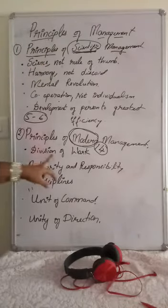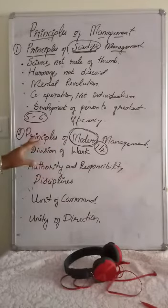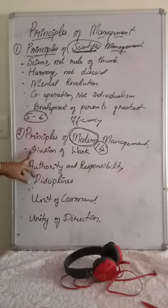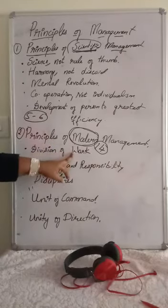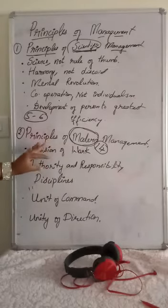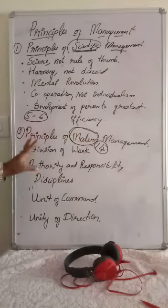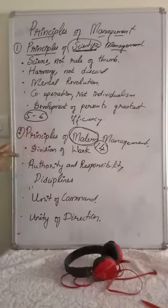Now we will move on to the principles of modern management. As mentioned, there are 14 principles. The first one is division of work. According to this principle, the whole work is divided into small tasks, and each task must be given to every employee according to their talent or skill. This division of work increases productivity.